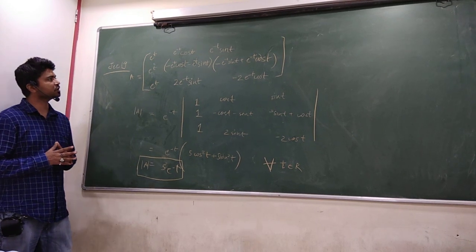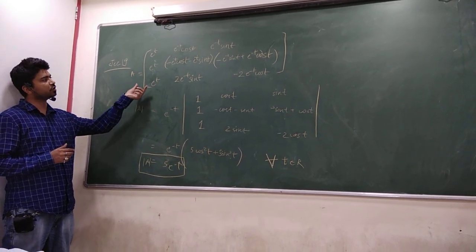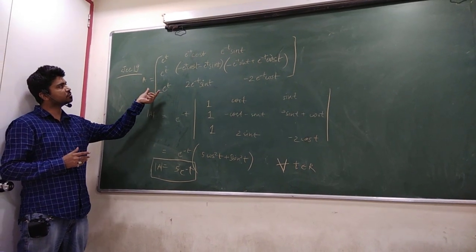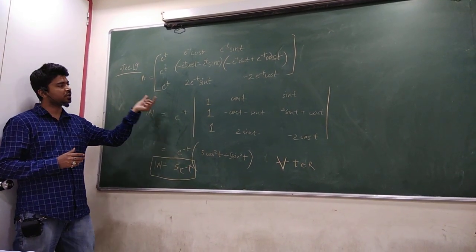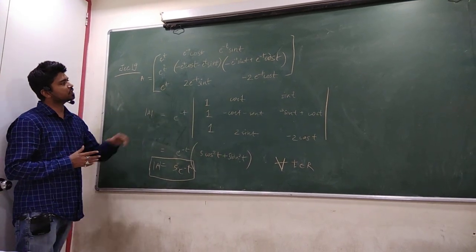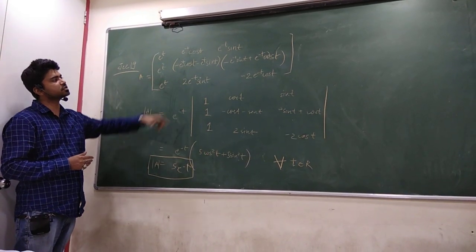So, determinant find out karne ke liye main kya karta hun? First column se e ki power t ko common le leta hun. So, e ki power t, jab maine pure column se common le liya, toh yaha par kya bacha? One. Then, second column se, if you see, e ki power minus t is common.